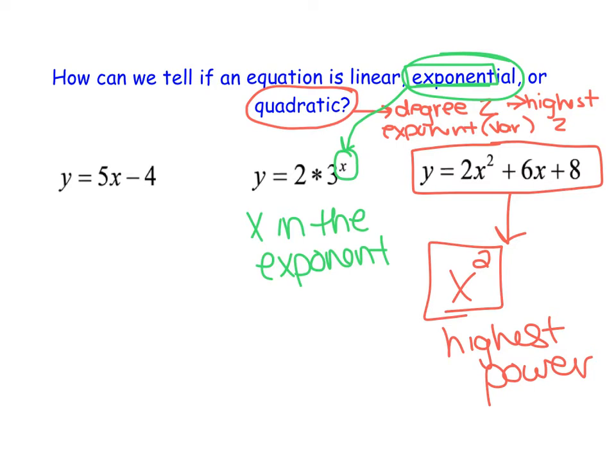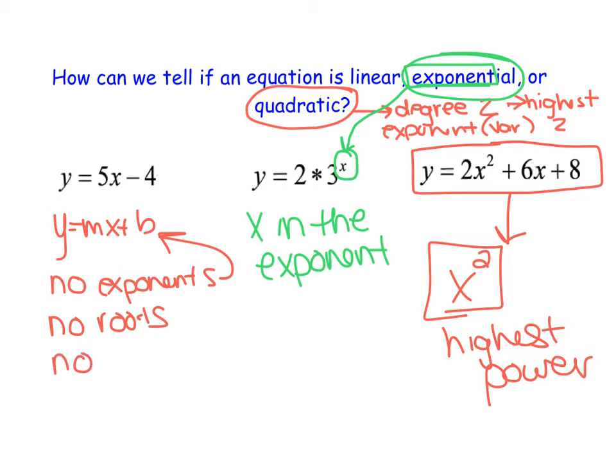And then finally, when we have a linear graph, we will see them in y equals mx plus b form. But what you need to notice here is that there are no exponents. There's none. There's no exponents here. Everything has an exponent of 1. There's no roots in there. There's no fractions with x in the denominator. There's none of that. It's just pretty much the most simplest equation that you'll see. You'll see y and x, and then you'll see some numbers just as coefficients. And that's it. That's what we notice here. So they're pretty easy to distinguish between if you know those identifying key characteristics.